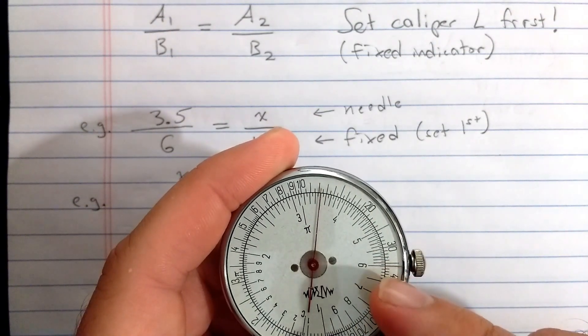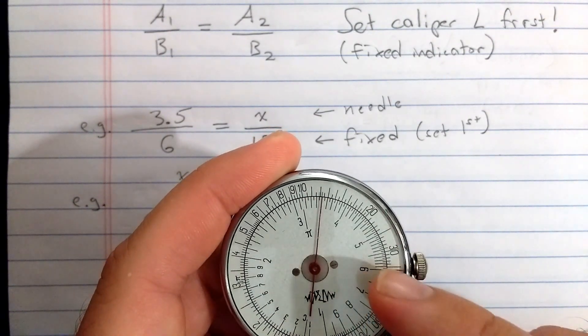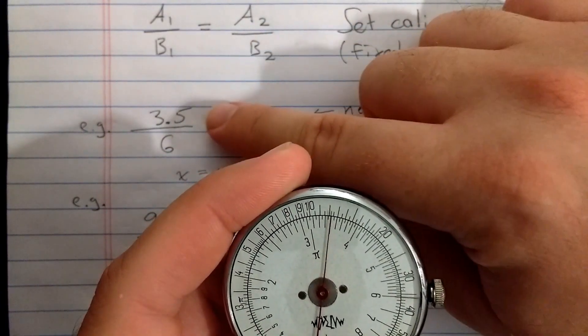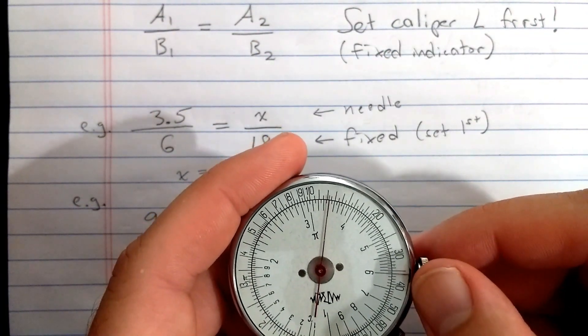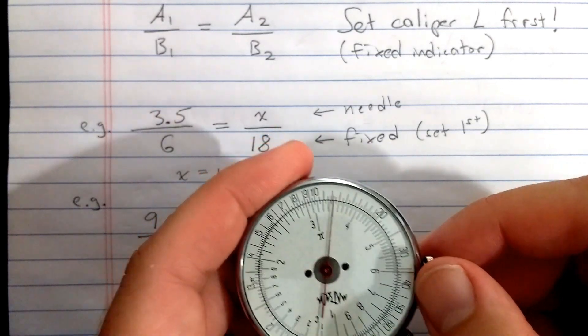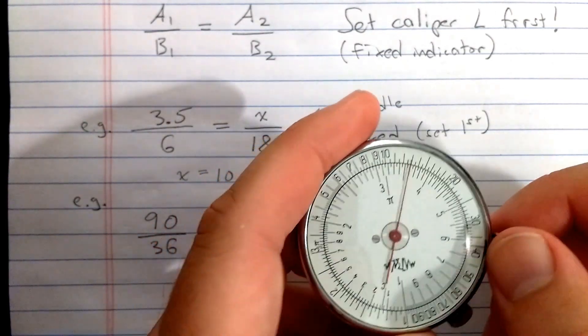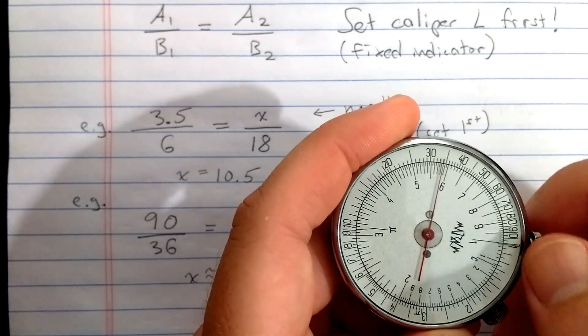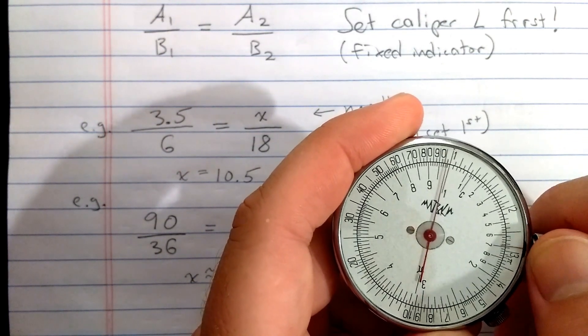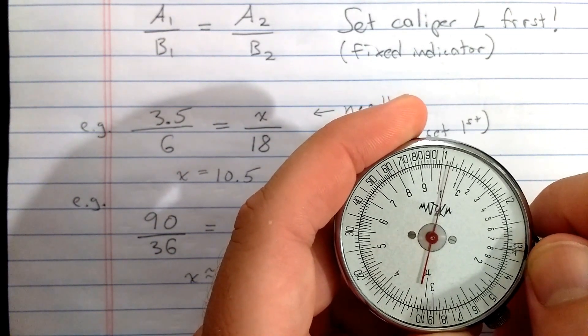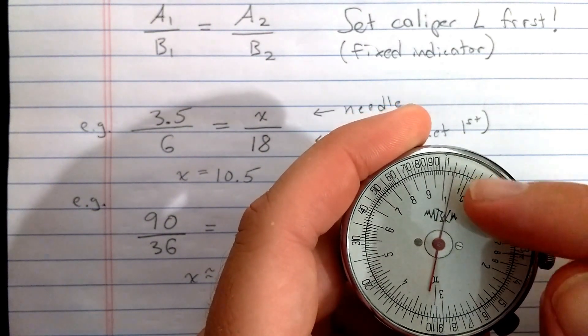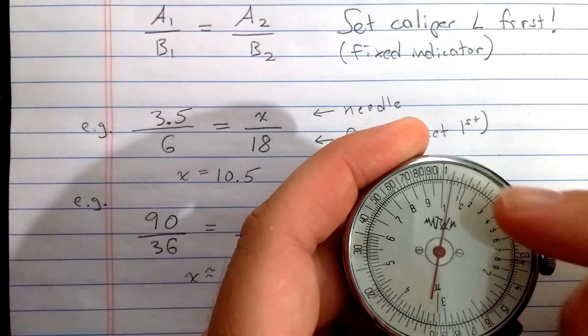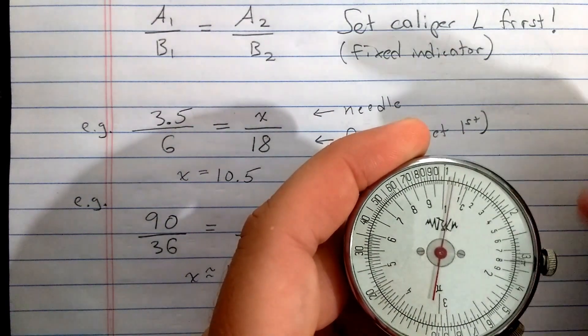So between here and here is like the difference between 3.5 and 6. So now what I need to do is move the fixed indicator to the 18. So fixed indicator is on 18 and result of the proportion 10.5 is reading on the needle.